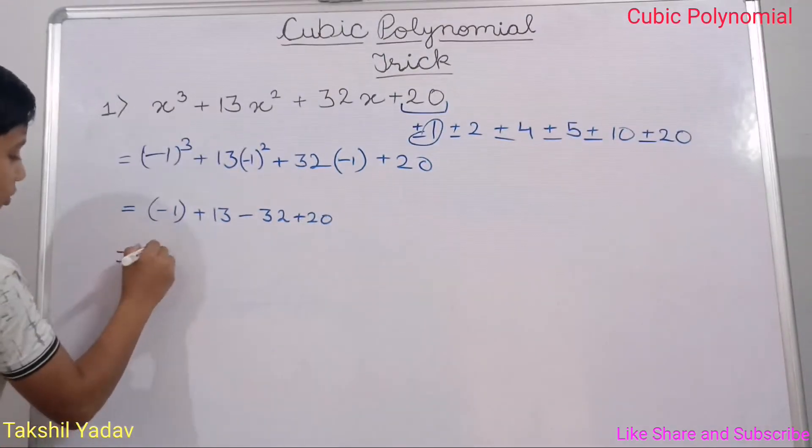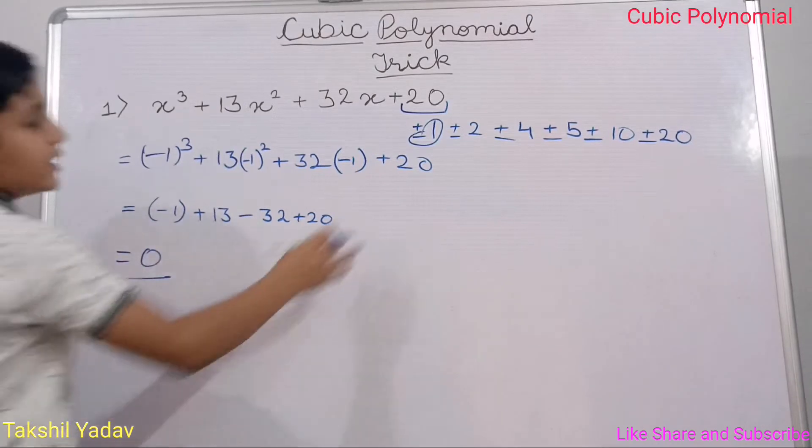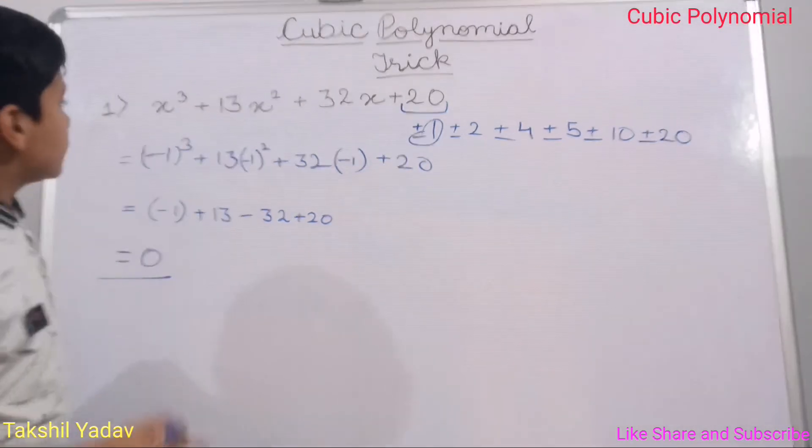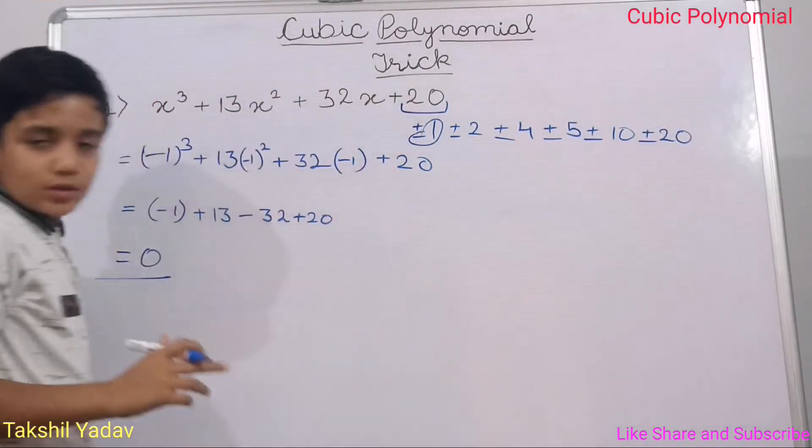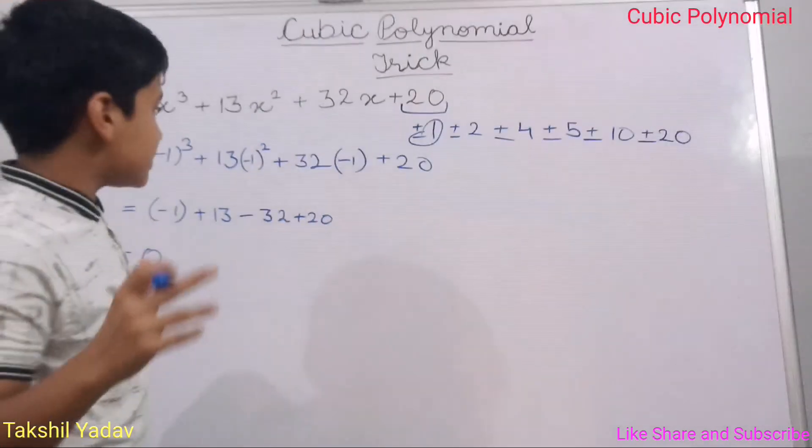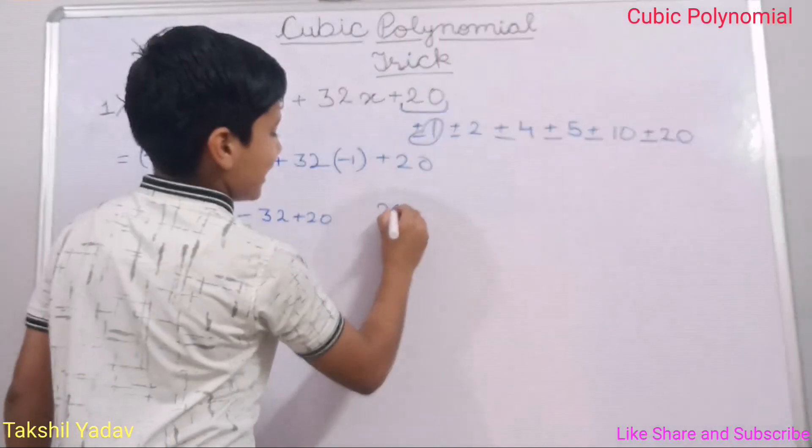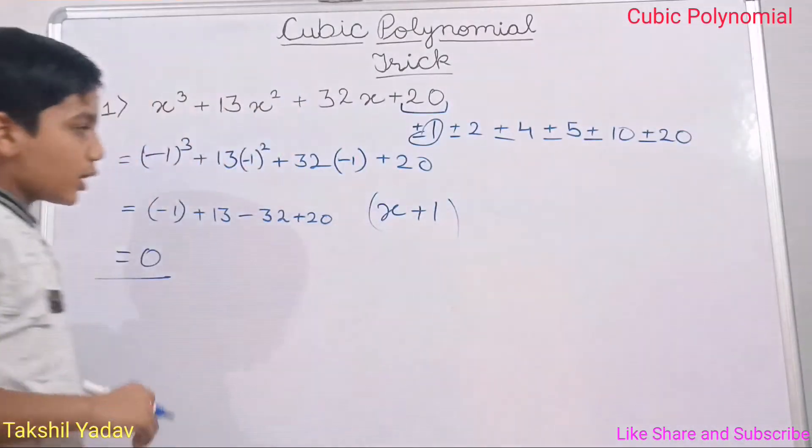Take a look. This gives us 0, which means that minus 1 is a zero of the cubic polynomial x³ + 13x² + 32x + 20. So our first factor is x + 1.